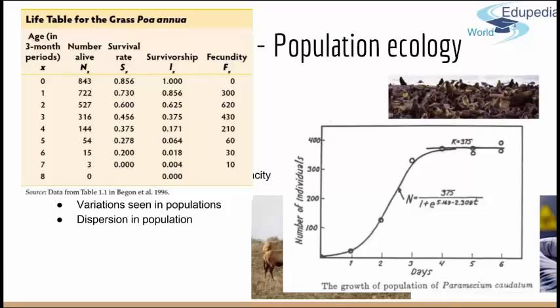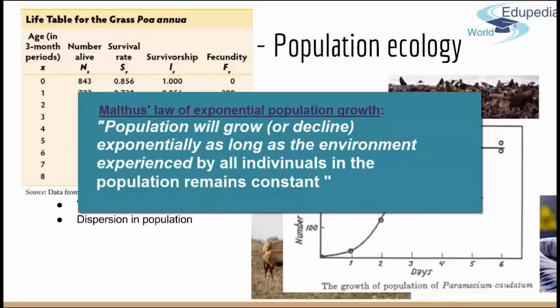The most fundamental law of population ecology is Thomas Malthus's exponential law of population growth, which states that a population will grow or decline exponentially as long as the environment experienced by all individuals in the population remains constant. That is something we will discuss in the next presentation. Thanks for listening — goodbye.